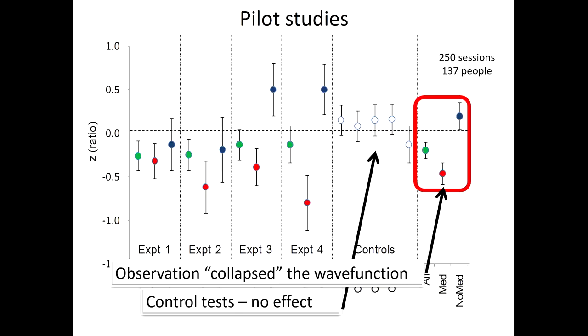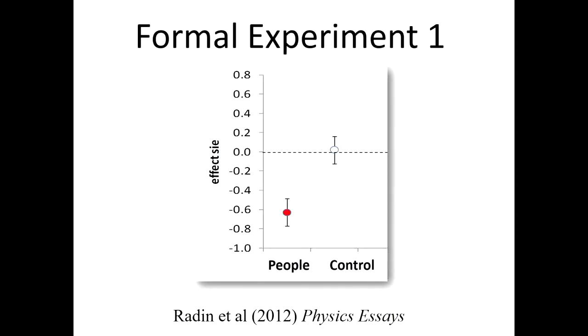So we were encouraged by this to go ahead and do a formal experiment. Formal in the sense that we pre-specified how many sessions we would do in advance. So 50 sessions. So here's the result of the 50 session pre-planned experiment using the same analysis that we had used in the previous experiments. And this gave us a five sigma result. So for those of you who are not used to the term sigma, think of it in terms of z-score. It's the same thing. Standard normal deviate. So we got a five sigma result when people were observing. And when nobody was doing the observing, we got almost exactly chance.